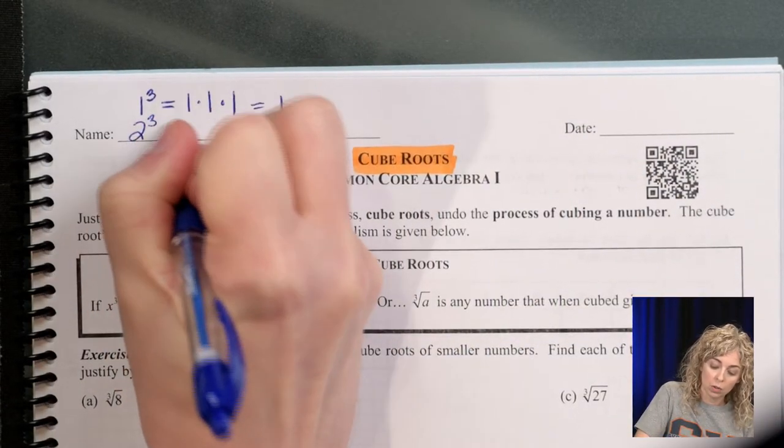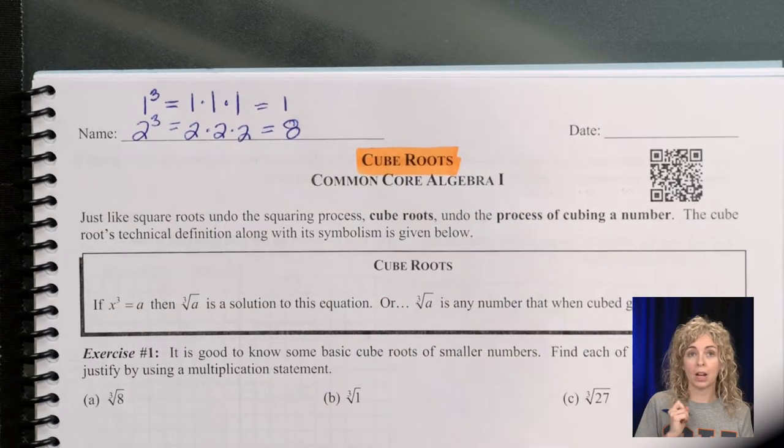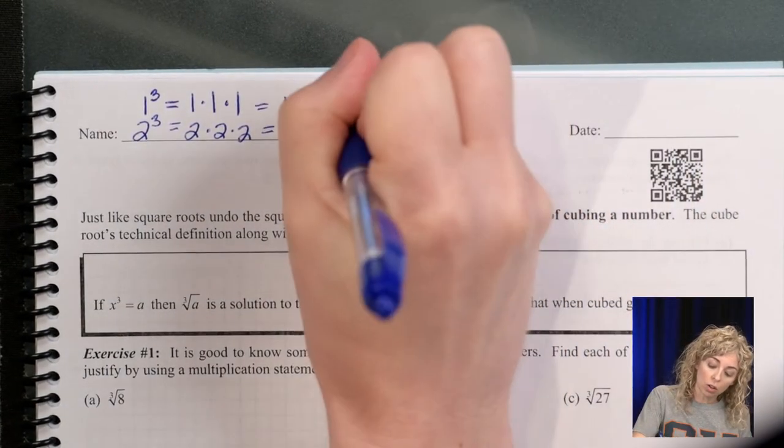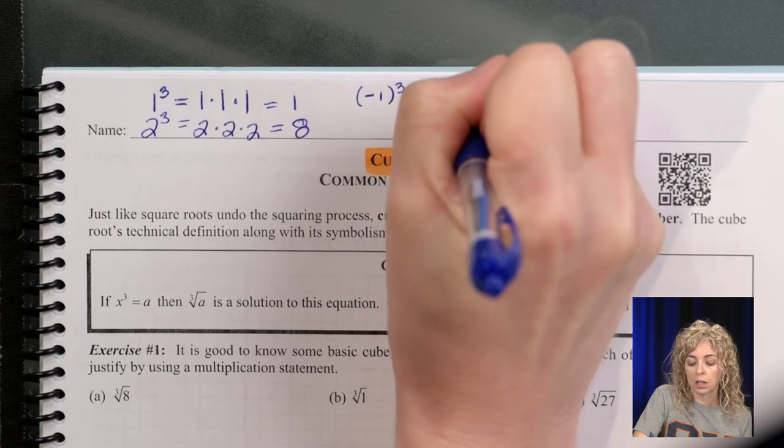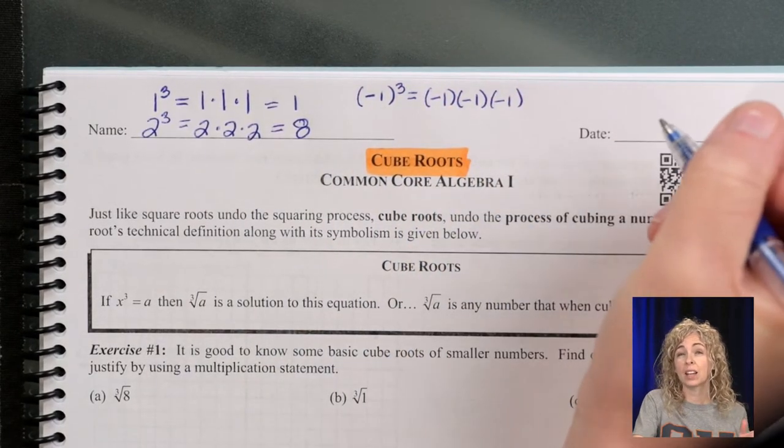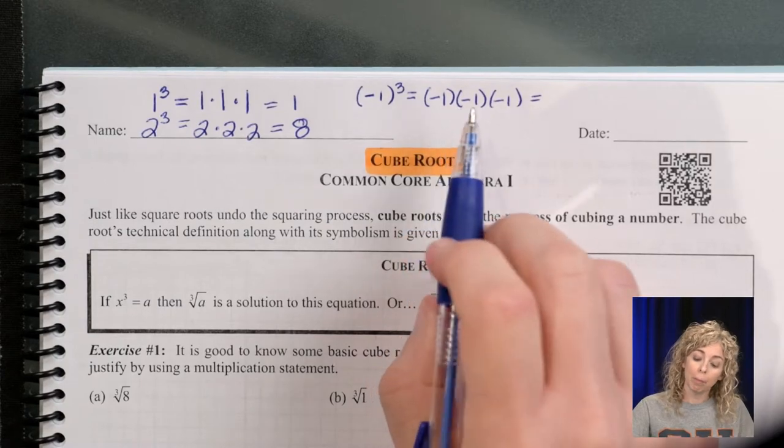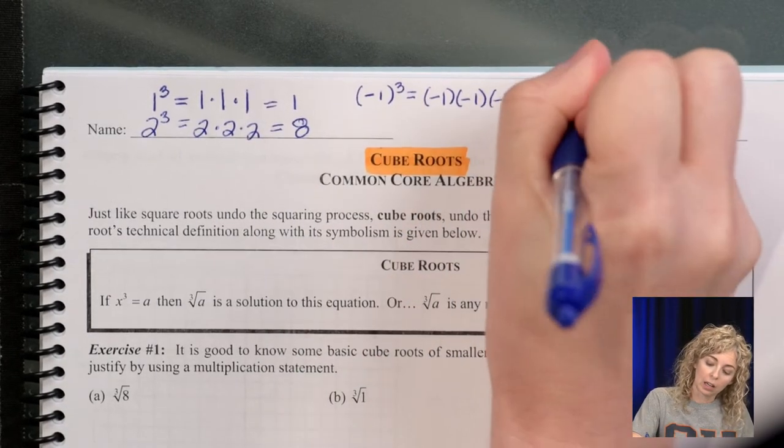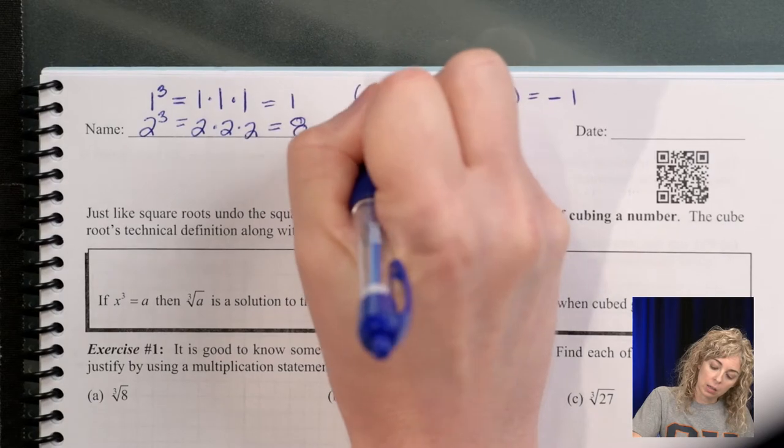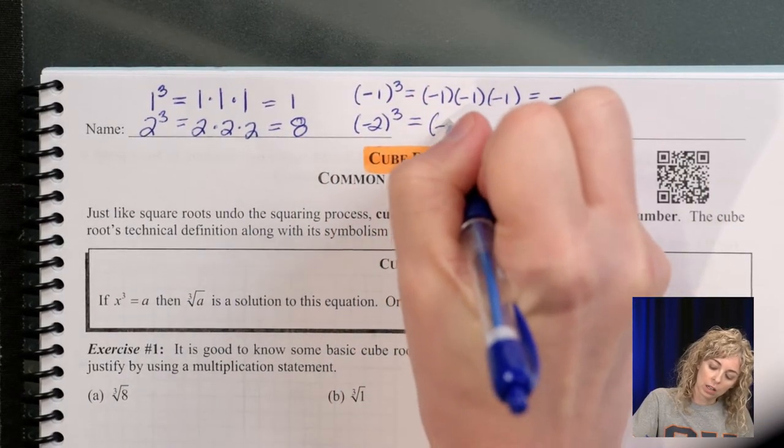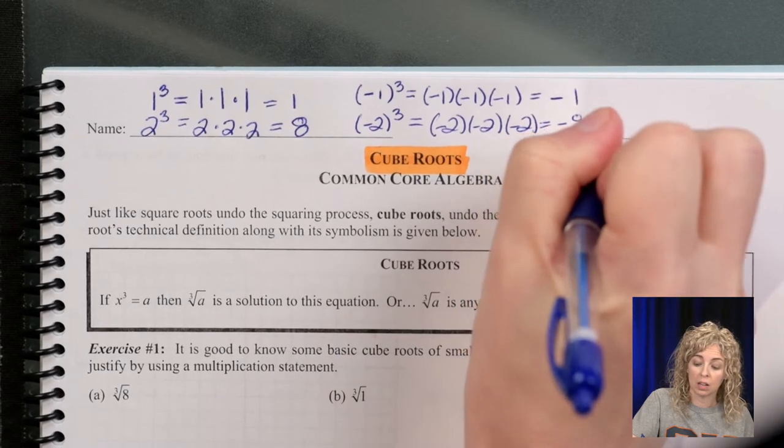2 cubed is 2 × 2 × 2, which is 2 × 2 = 4, times 2 = 8. We can also cube negative 1. So (-1)³ is (-1) × (-1) × (-1). With negatives, we like to use parentheses for multiplication. So (-1) × (-1) is positive 1, but when we multiply by negative 1, we get negative 1 as an answer. Let's see what (-2)³ is. So (-2) × (-2) is positive 4. Positive 4 × (-2) is negative 8.